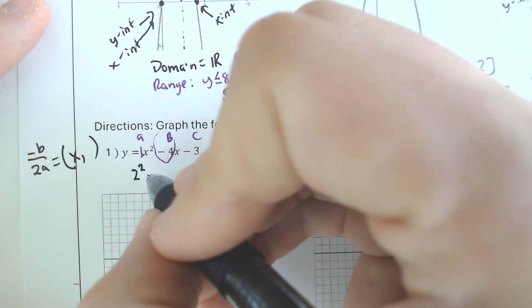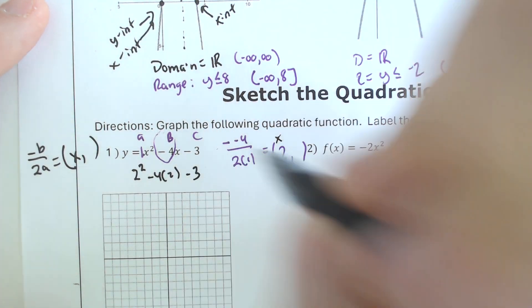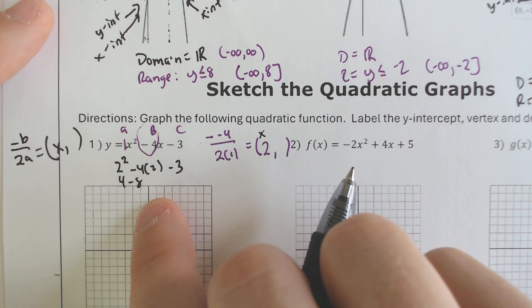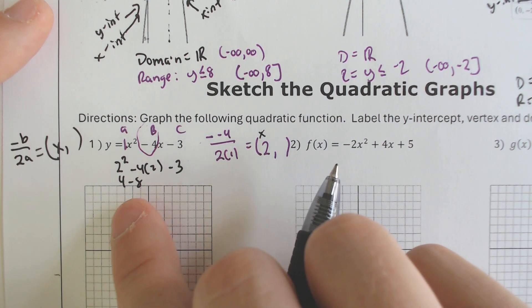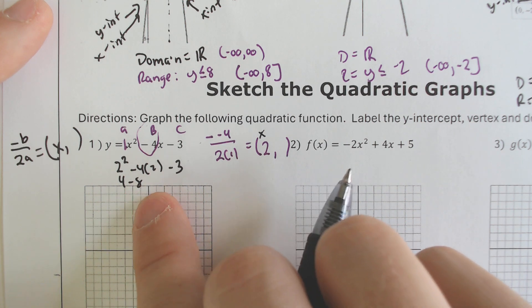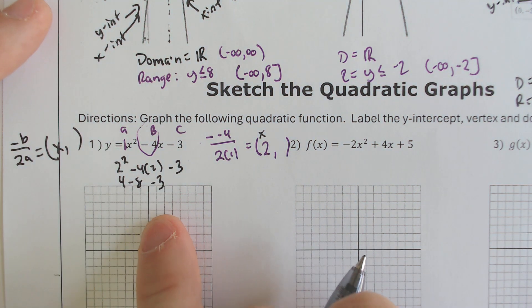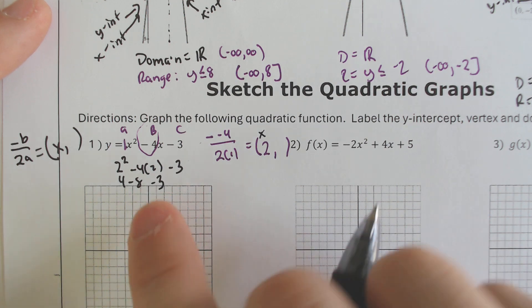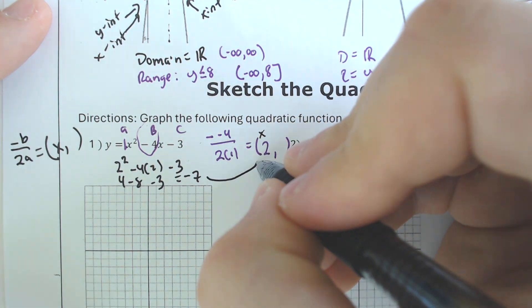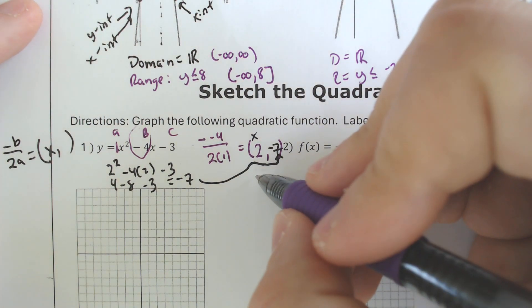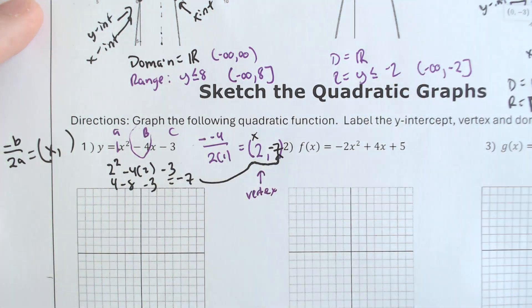So we're going to do 2 squared minus 4 times 2 minus 3. Notice how this is 4 minus 8 — these two numbers are always going to be half of one another and opposite signs. See how 4 is half of 8. If we combine all these terms, we get 4 minus 8 is negative 4, minus 3 makes negative 7. That is the y-value of the vertex. So this is our vertex right here — we plot that at 2, negative 7.